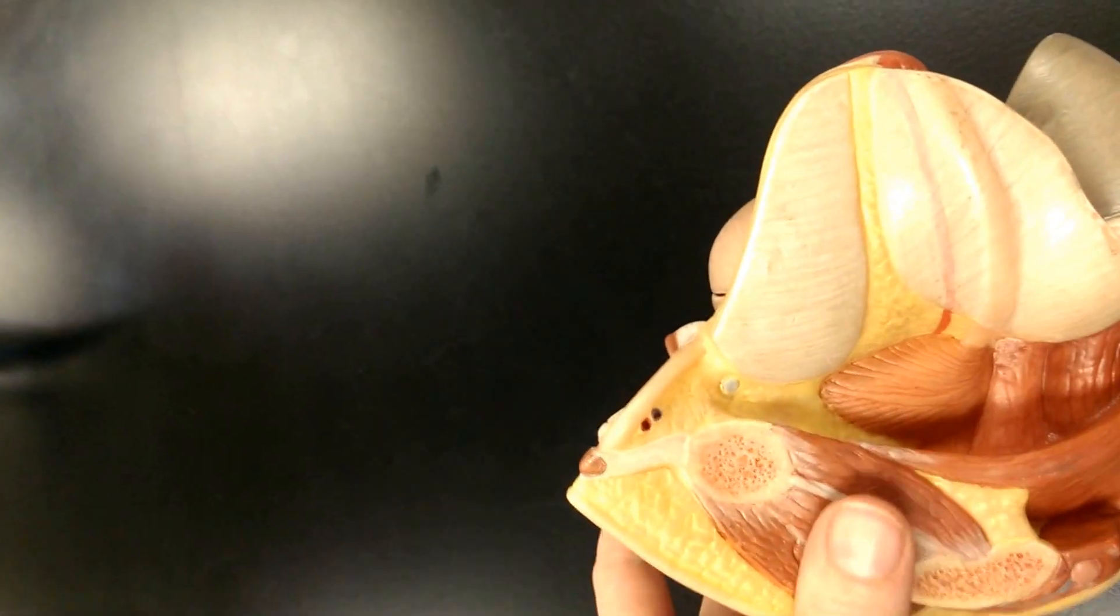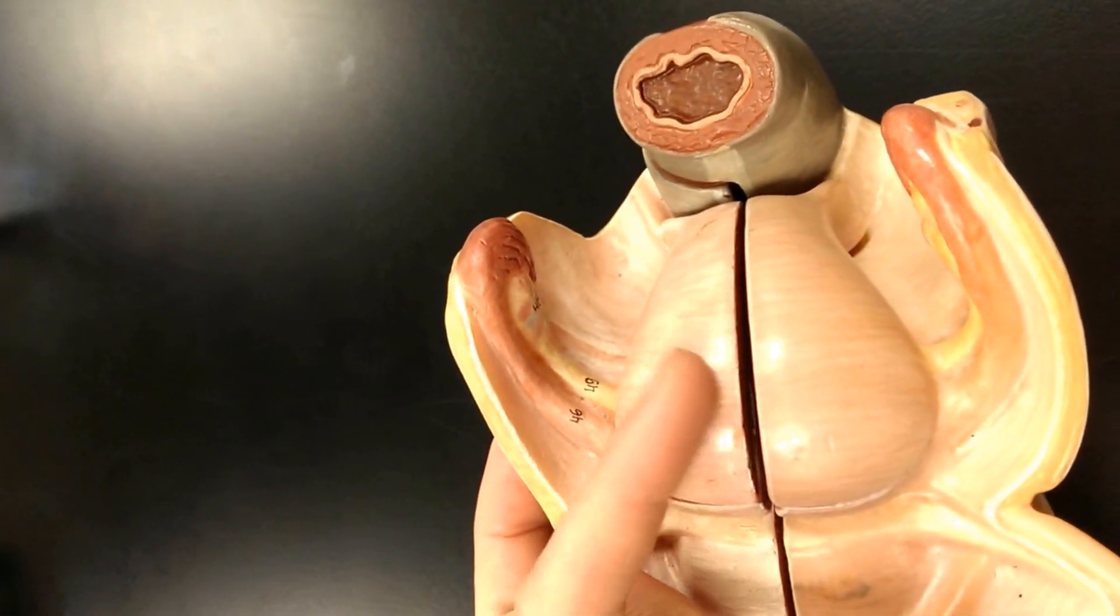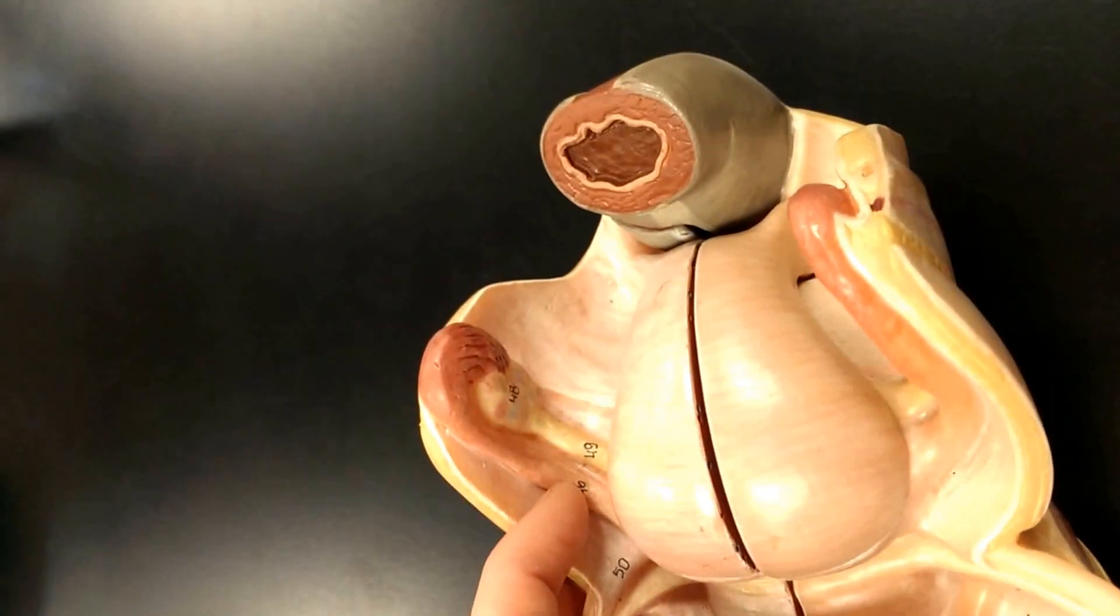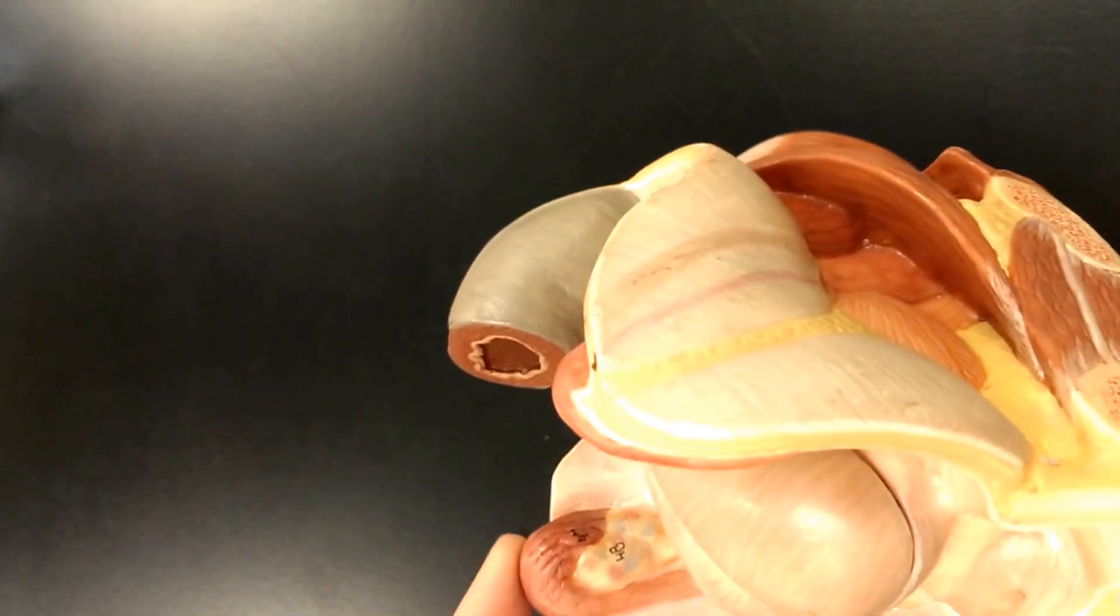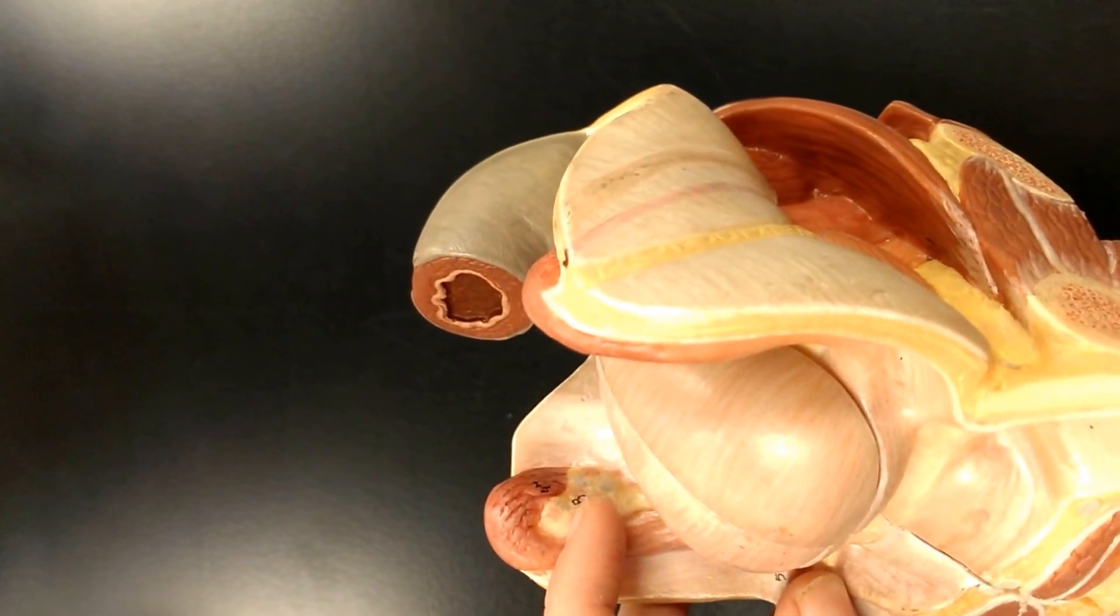If I flip this over and take a look at a superior view, I can see the uterus here. I can see a uterine tube, a fallopian tube, including an infundibulum and some small fimbriae on the end, and then the ovary here.